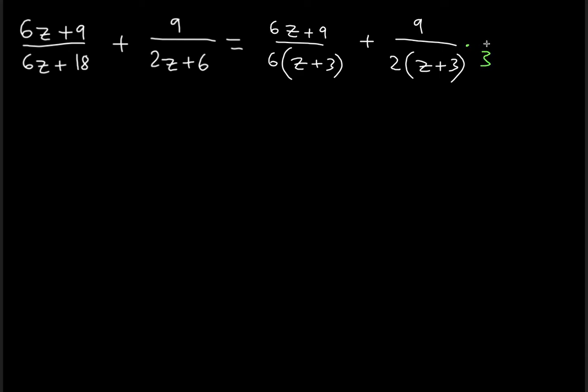But remember, when you multiply the denominator you have to do the same thing to the numerator, because 3 divided by 3 is 1. And you know that every single expression that you see is always multiplied by 1, so in order to not violate that, you have to have both numbers in the numerator and denominator.